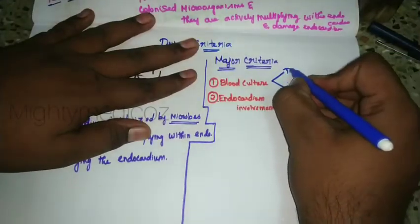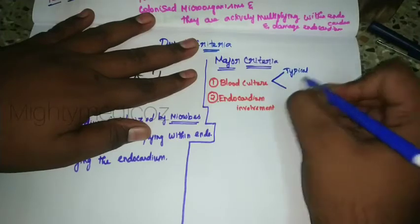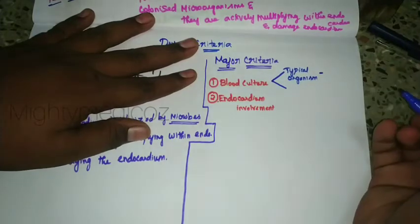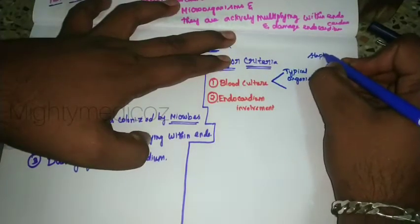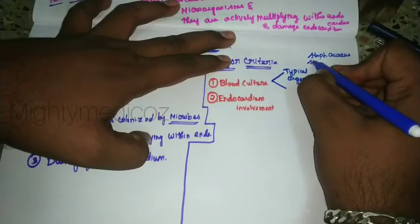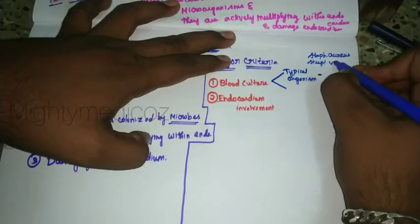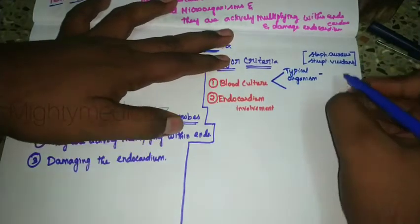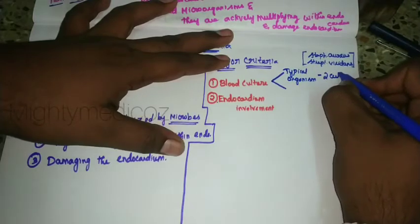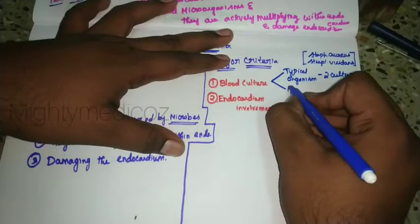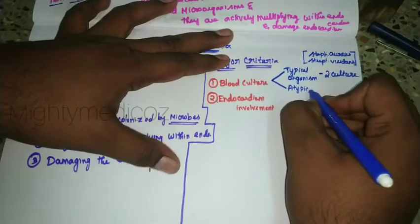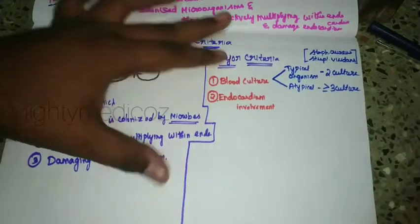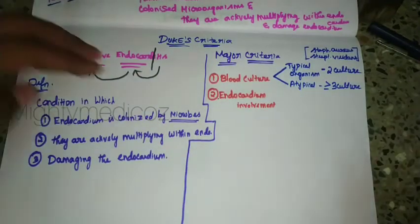The first major criterion involves typical organisms — that is, organisms that most commonly cause infective endocarditis, such as Staph aureus or Strep viridans. These are the typical organisms that cause endocarditis. For blood culture, when these typical organisms are identified, greater than or equal to three cultures must be positive with the same organism. That is the criterion for blood culture.